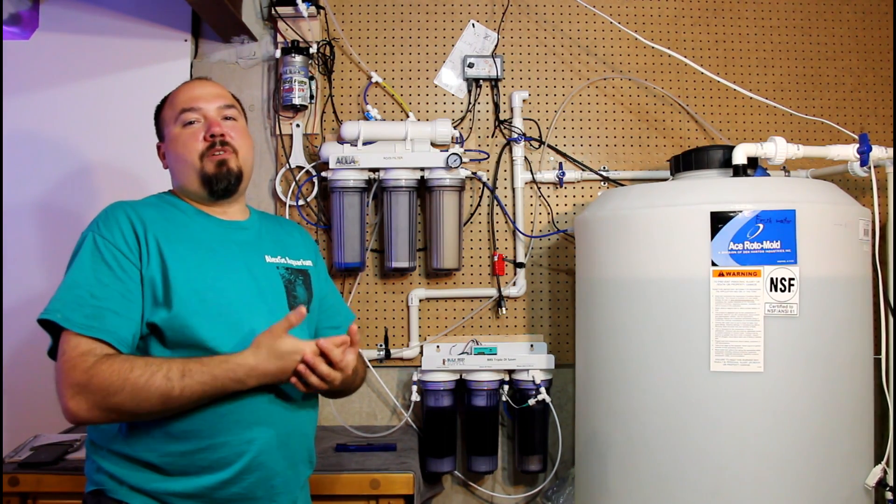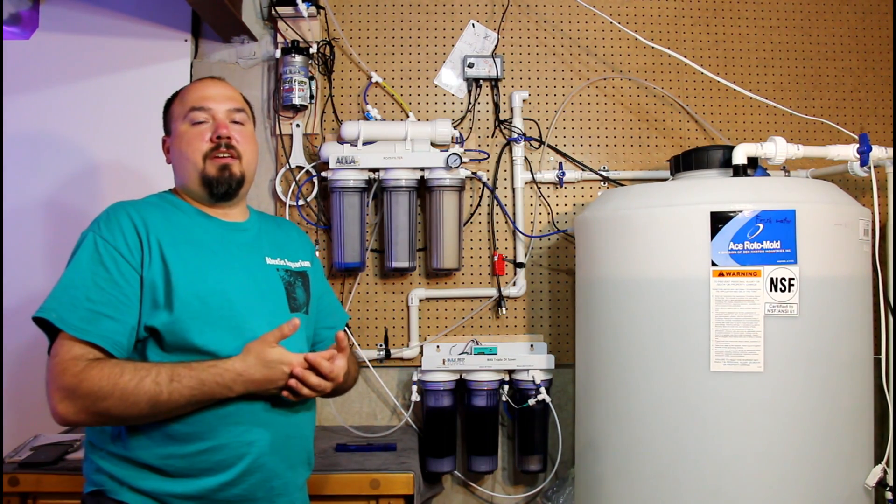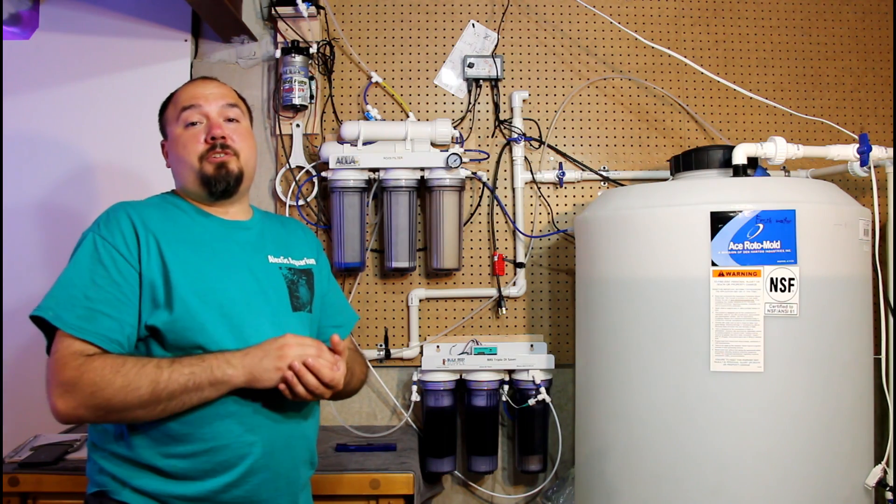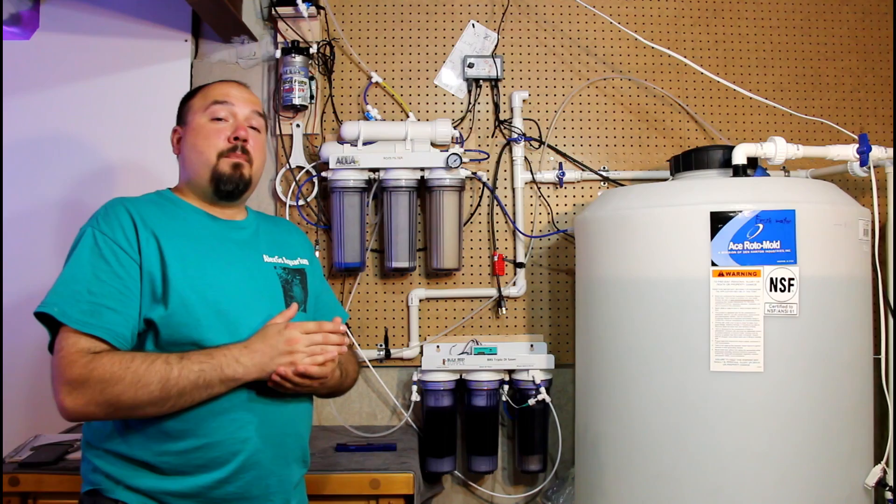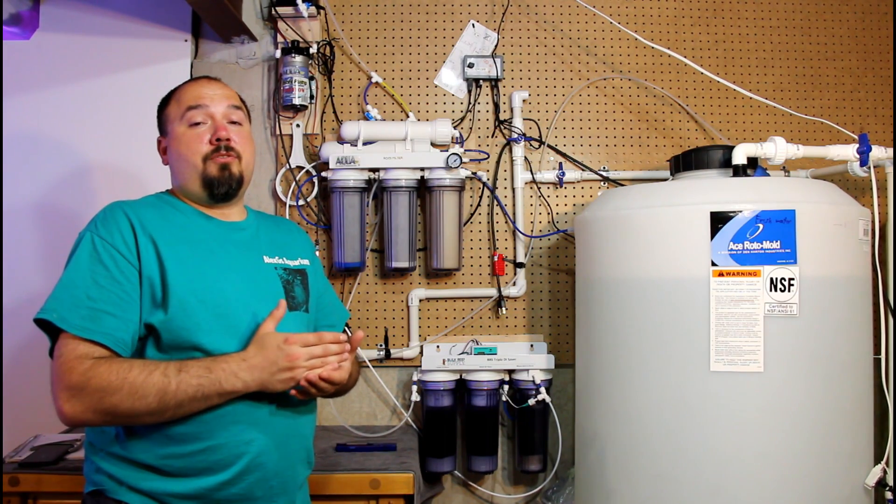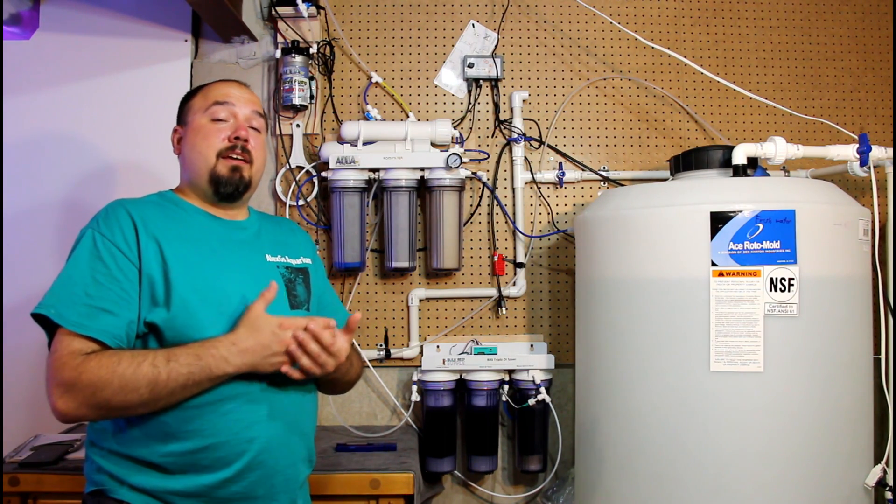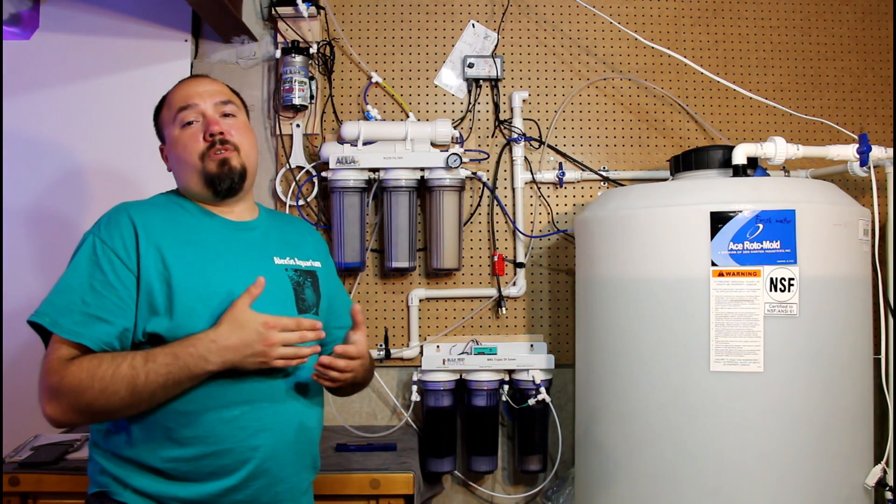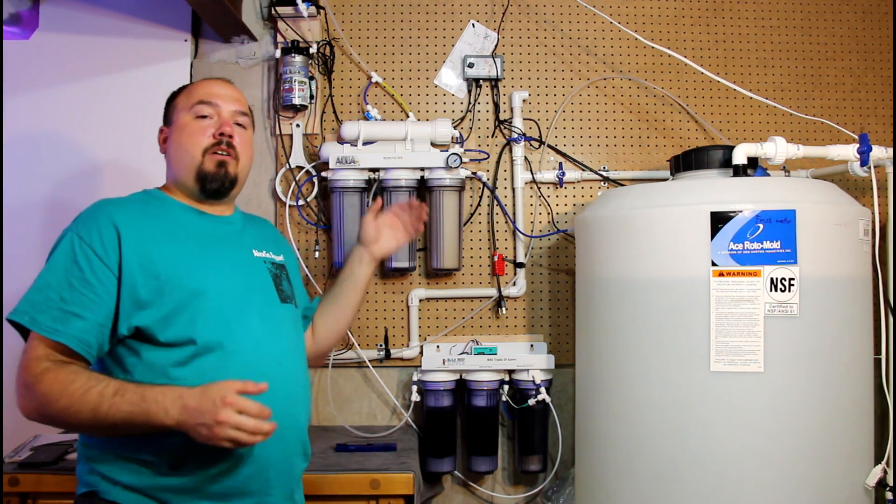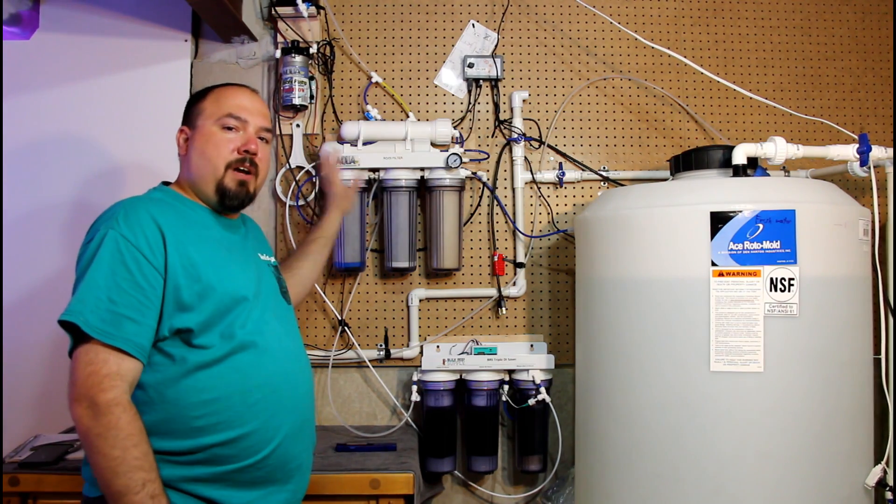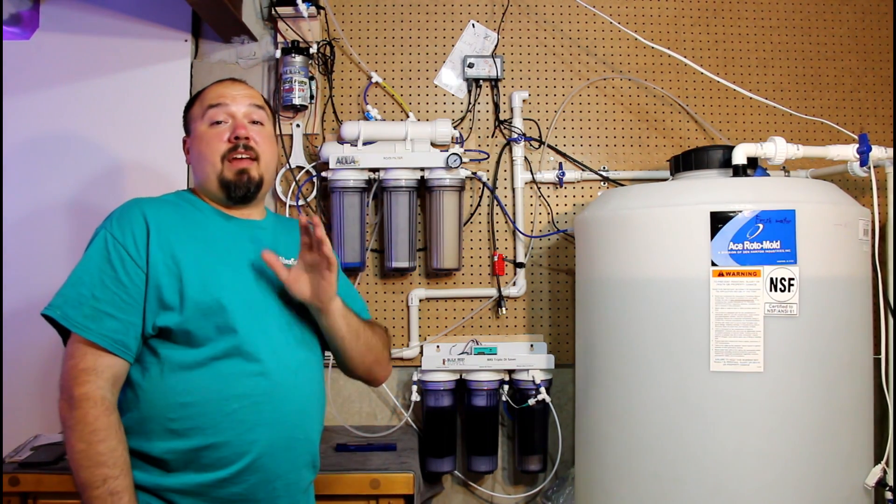The first thing I had to look at when I installed an RODI unit in my home was my water pressure coming in. I live in the suburbs of Chicago and my water pressure here in Illinois is not that great. It's around 40 psi or 40 pounds per square inch.